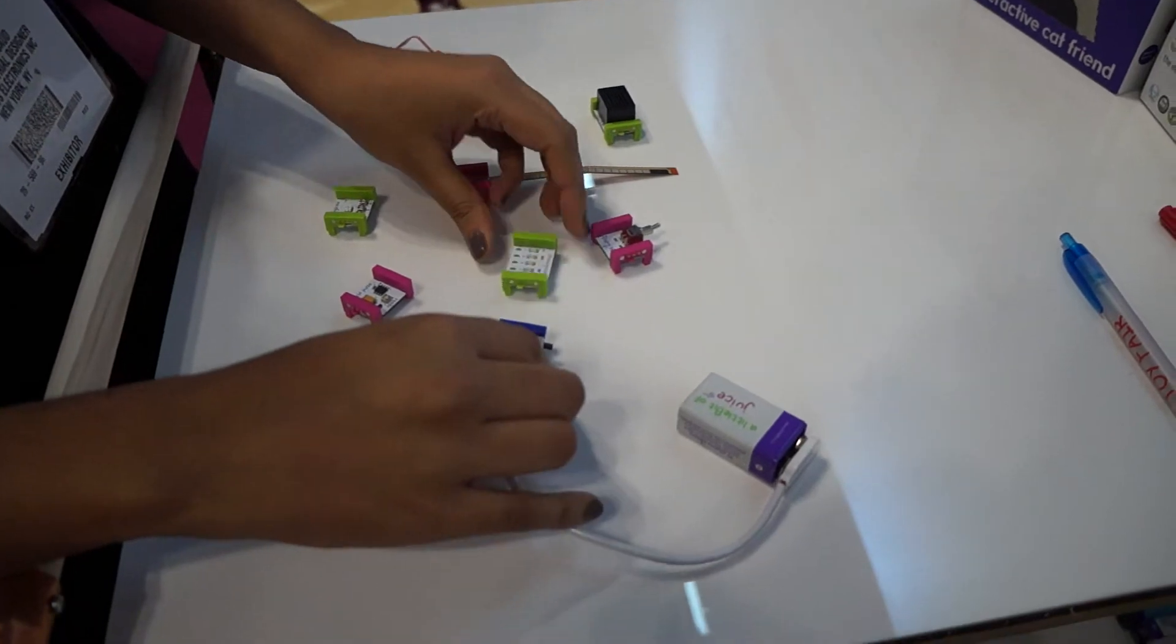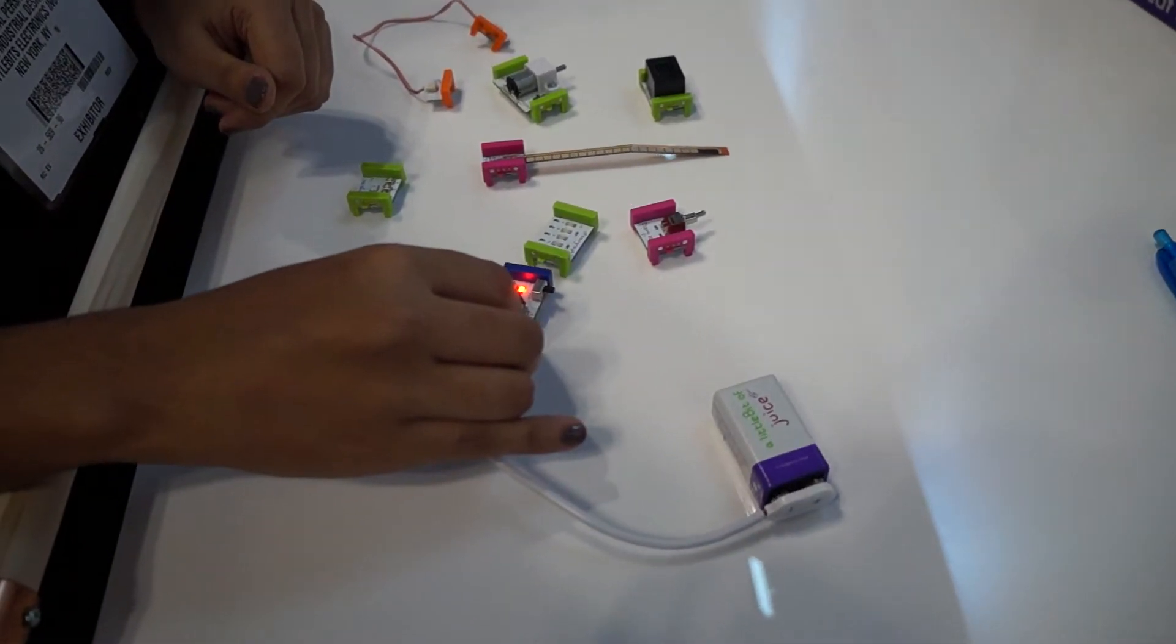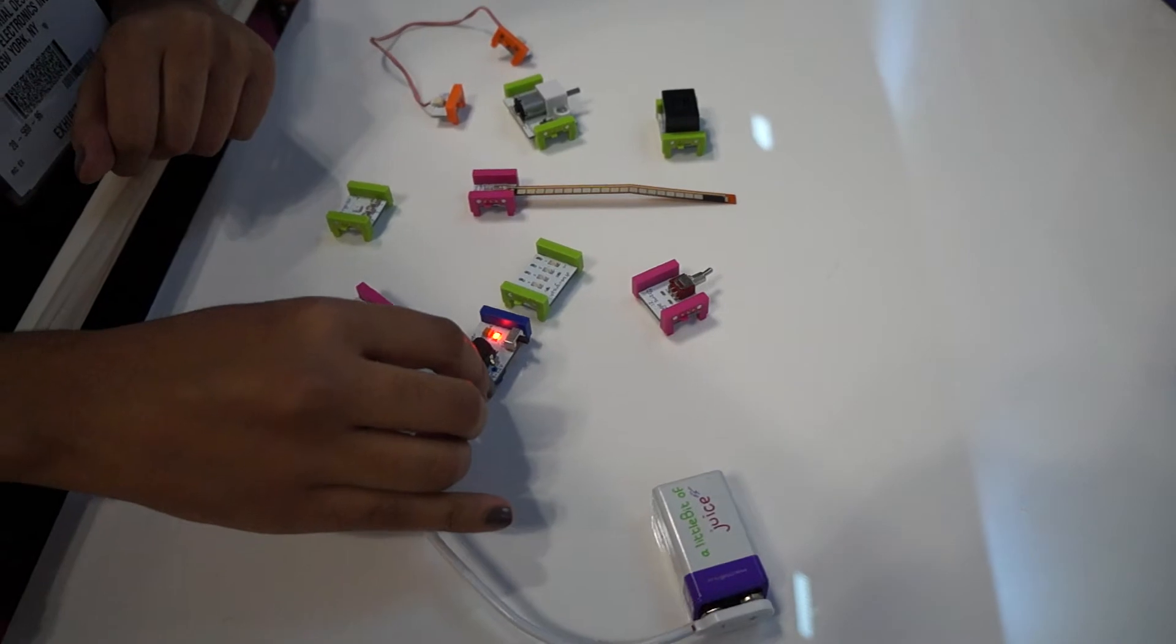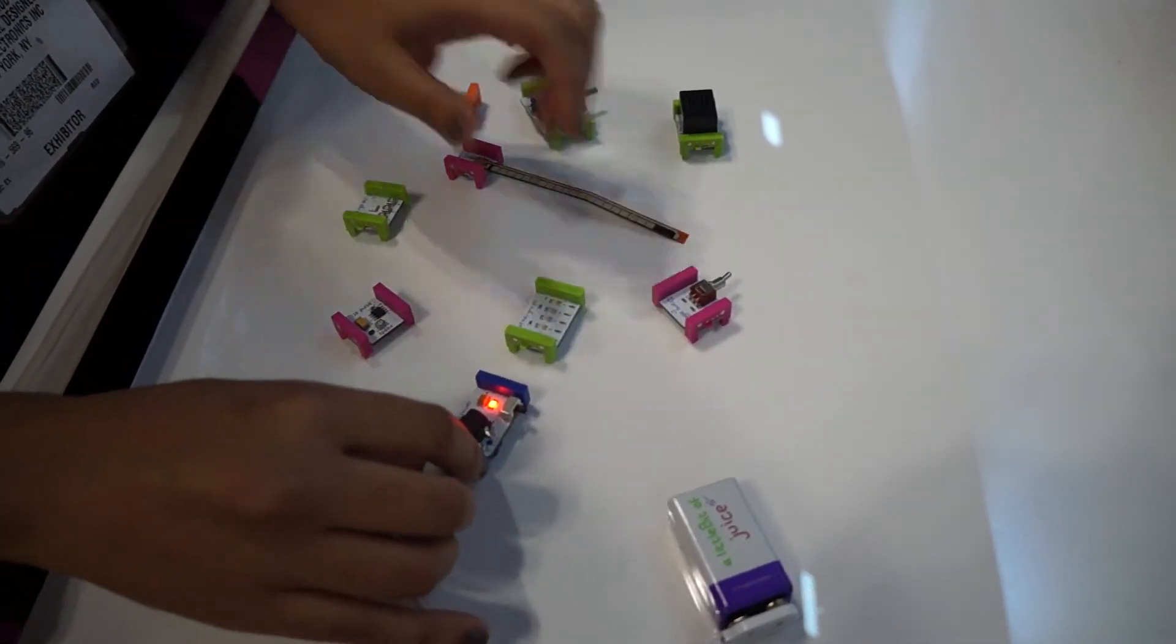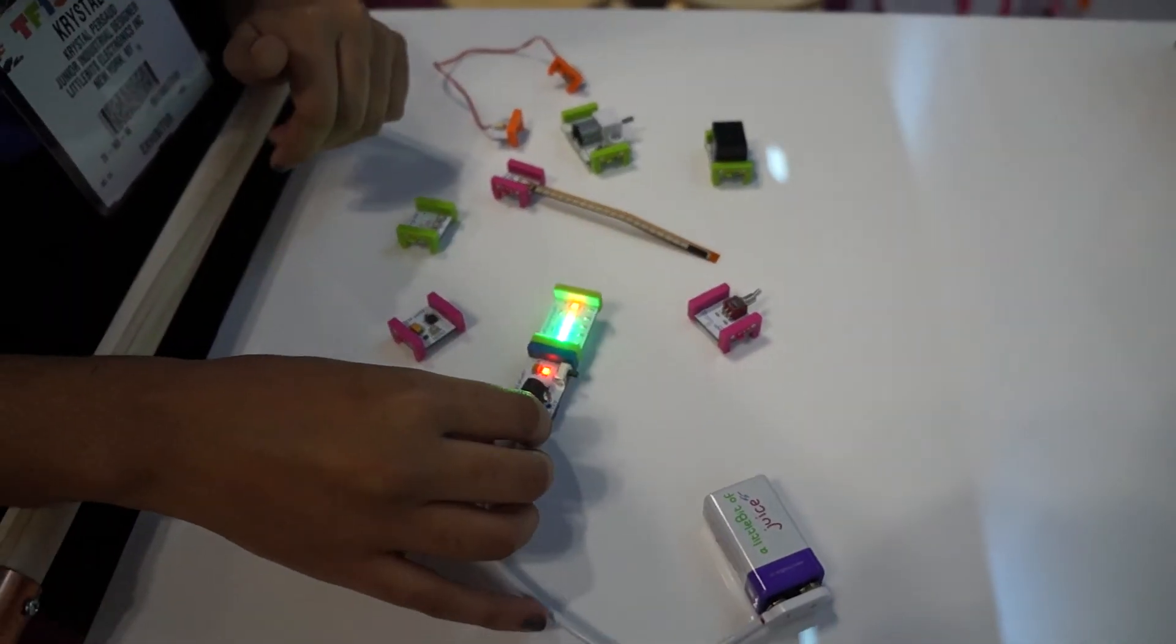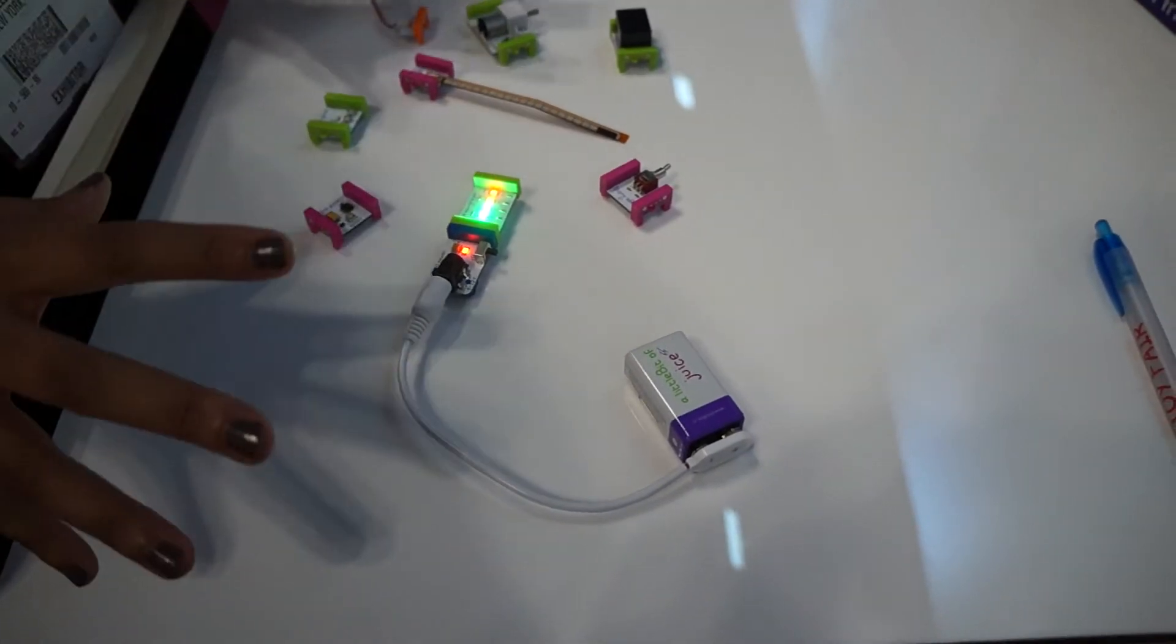This is a bar graph so it snaps together with magnets. You'll see that if you put it in the wrong direction it won't snap. Instant. So you can make a circuit instantly without knowing anything about engineering.